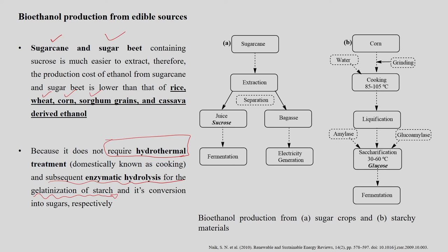For comparison, the conversion pathway of sugarcane shows that after extraction, juice containing sucrose is separated from the bagasse. The sucrose or juice can be fermented to produce ethanol, and the bagasse produced during the process can be used for heat or electricity. The number of steps involved is relatively fewer, making production cost lower.